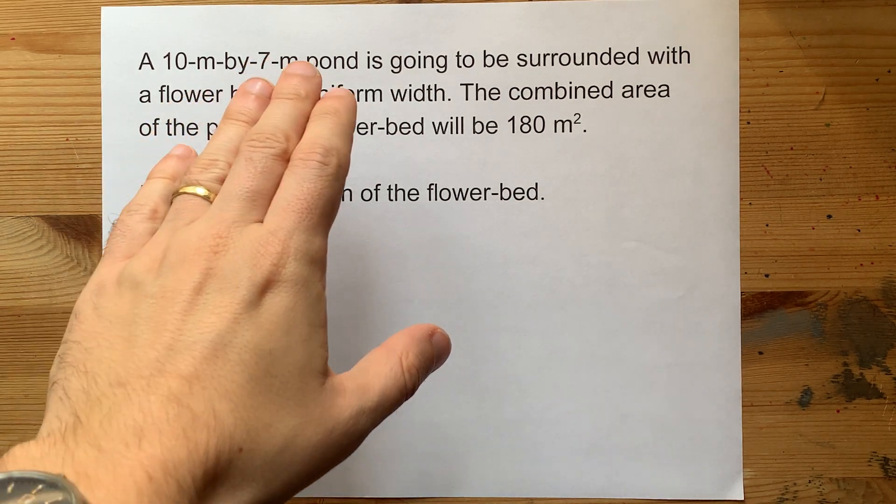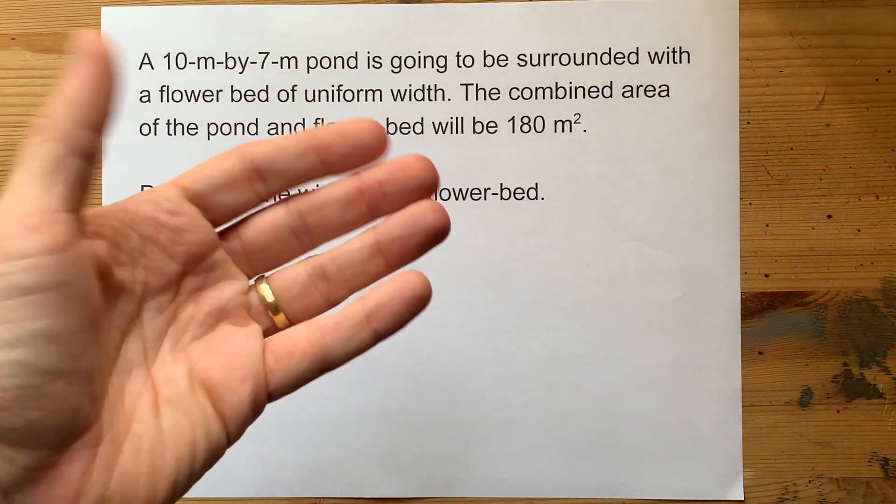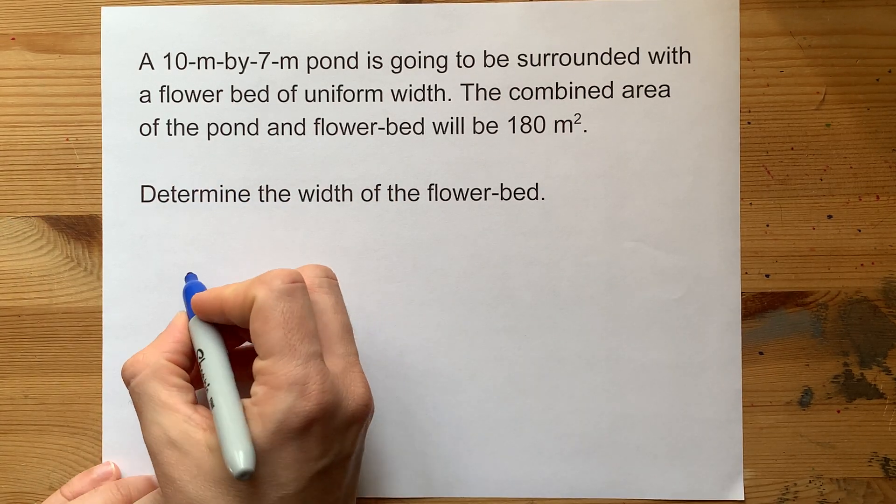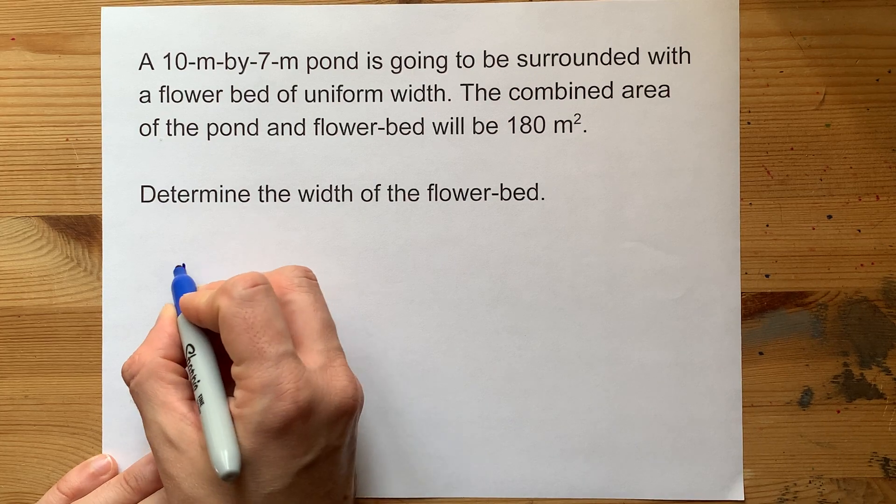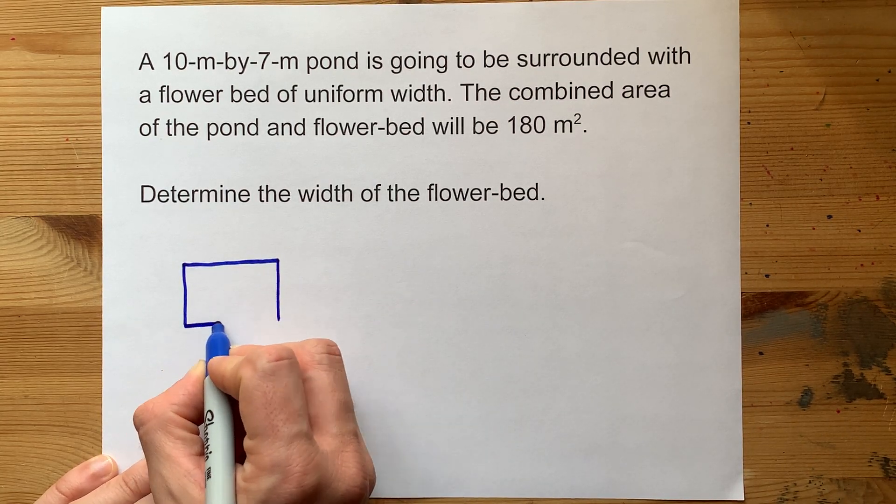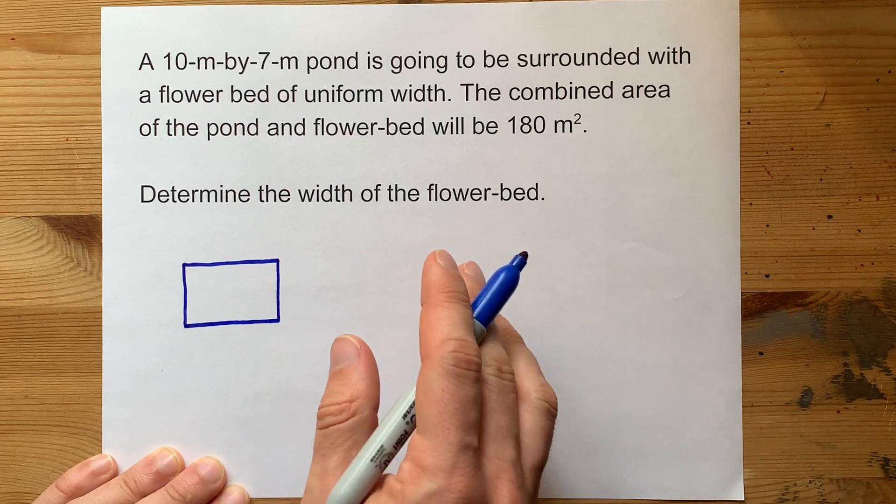A 10 meter by 7 meter pond is going to be surrounded by a flower bed of uniform width. The combined area of the pond and flower bed together will be 180 meters squared. What is the width of the flower bed?